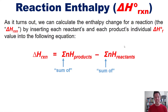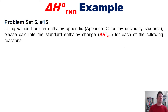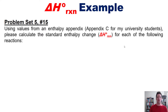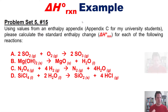I'll show you how to do this by taking you to an example problem from my university students' homework. Using values from an enthalpy appendix — Appendix C for the recommended text Chemistry: The Central Science, 12th edition — please calculate the standard enthalpy change, delta H rxn, for each of the following reactions.